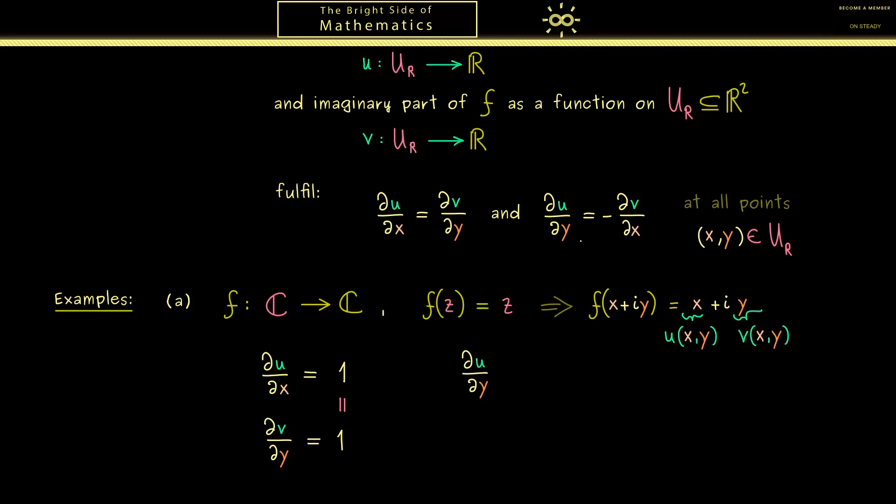So let's go to the second equation where we have du/dy. There we see there is no y in u, therefore we get 0. In fact the same holds for dv/dx, because there is no x in v. And also of course the minus sign does not change anything. In summary both Cauchy-Riemann equations are fulfilled. From that we then can conclude that the function f is holomorphic.